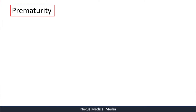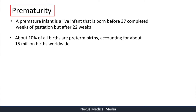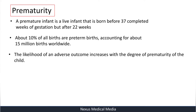Welcome to Nexus Medical Media. In this video we are going to talk about prematurity. A premature infant is a live infant born before 37 completed weeks of gestation but after 22 weeks. So in other words, from 22 to before 37 weeks is called prematurity. About 10 percent of all births are preterm births, accounting for 15 million births worldwide.